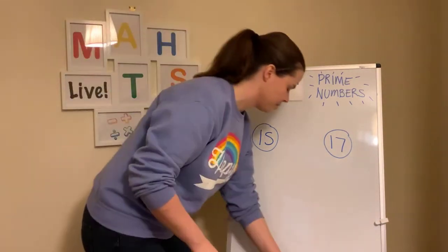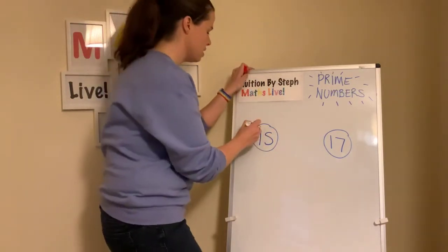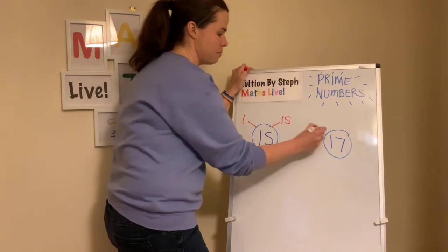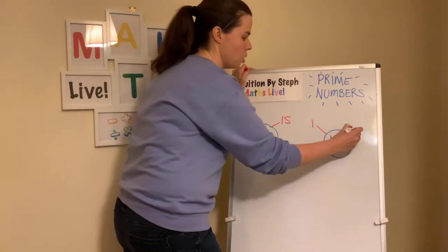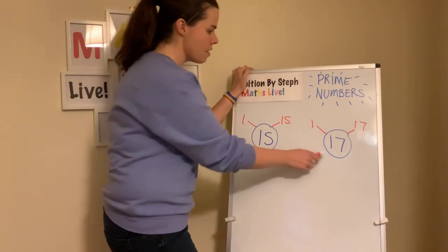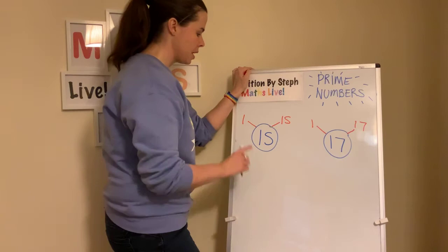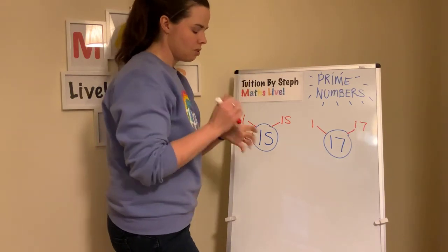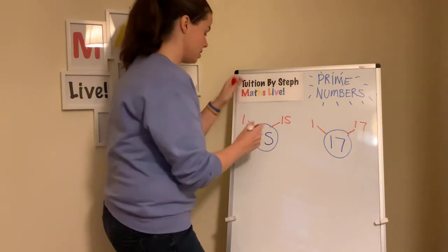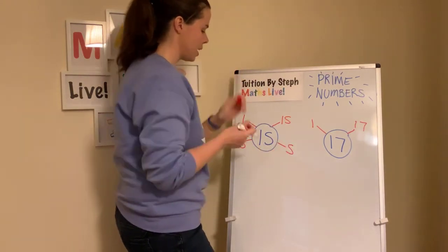Some people have got an answer. We know that they both have one and themselves — that's the same for both of them. Neither of them are in the two times table because they're not even numbers. 15: three, six, nine, twelve, fifteen — it's in the threes and the fives. Is it in the fours? No. Is it in the fives? We've got the fives. Is it in the sixes? Six, twelve — no. Not in the sevens. That's it — there are no other factors of 15.